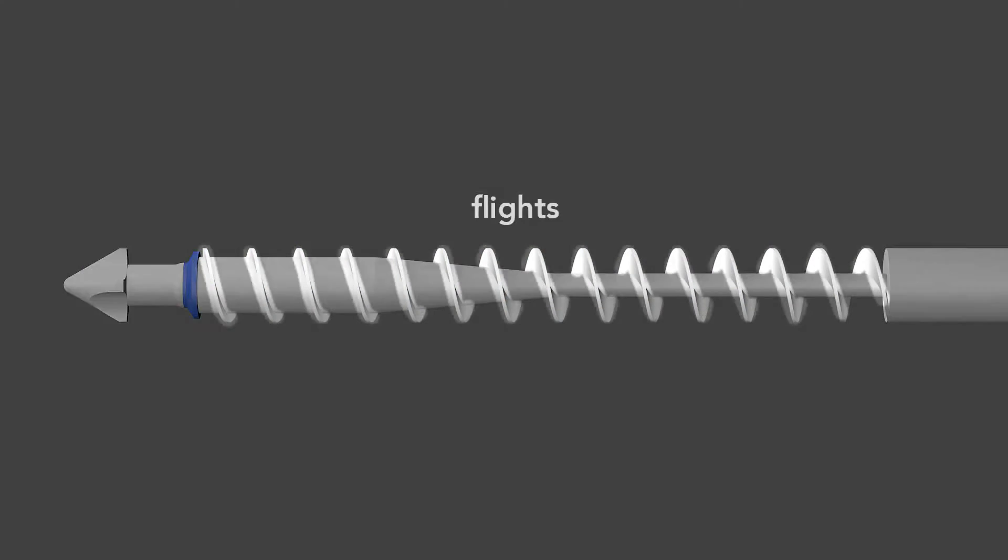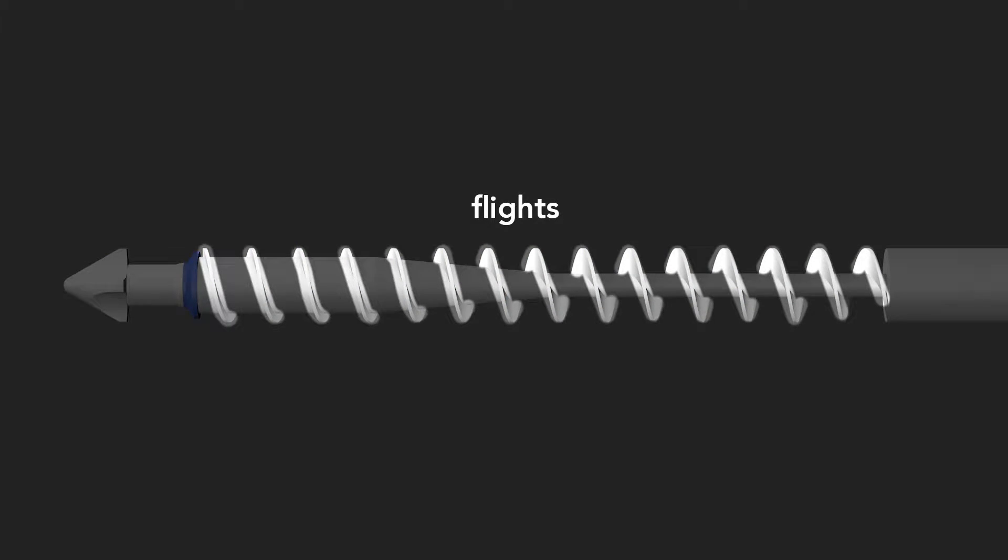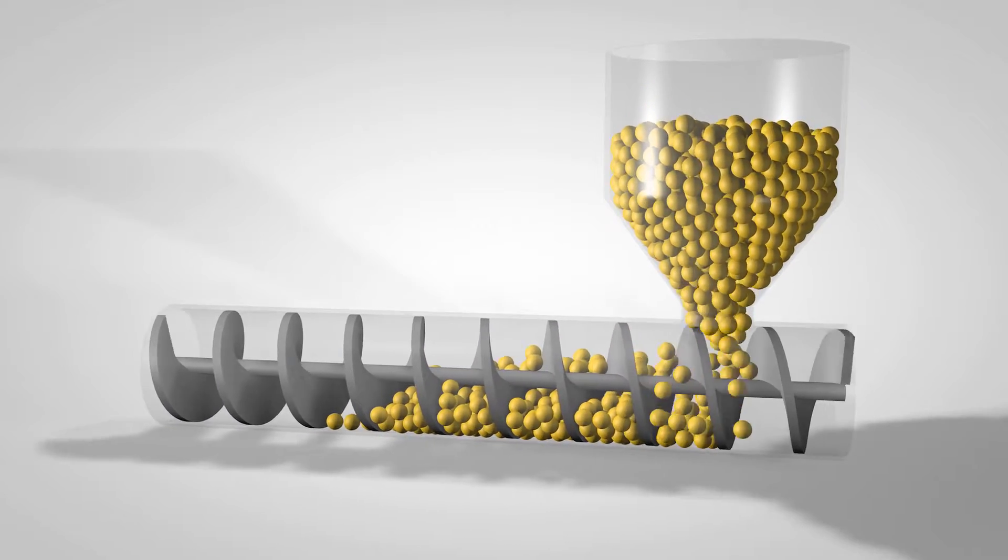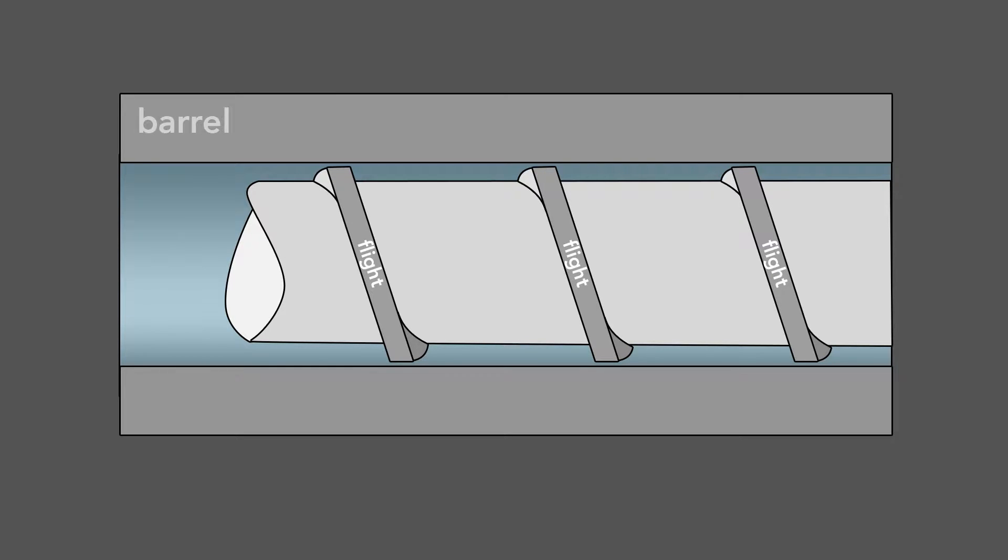Second, the screw has flights that wrap around the shaft. As the screw rotates, the flights transport the raw material forward through the barrel. The flights also serve to mix the plastic. The screw action agitates the melting pellets within the flights to create a uniform mixture.